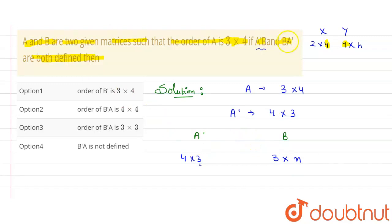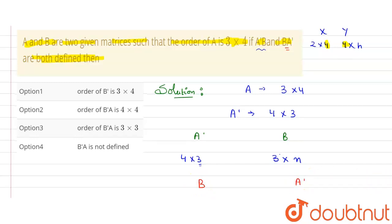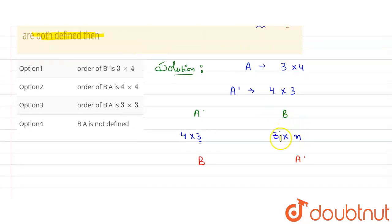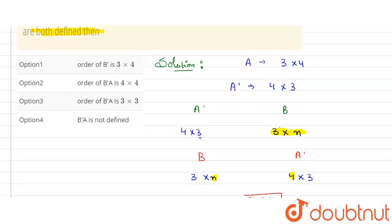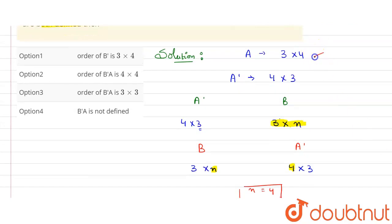It is also given that BA' is defined. So putting the values in: order of B is 3×n and order of A' is 4×3. For BA' to be defined, the number of columns in B must equal the number of rows in A', so n must equal 4. Therefore, n = 4.